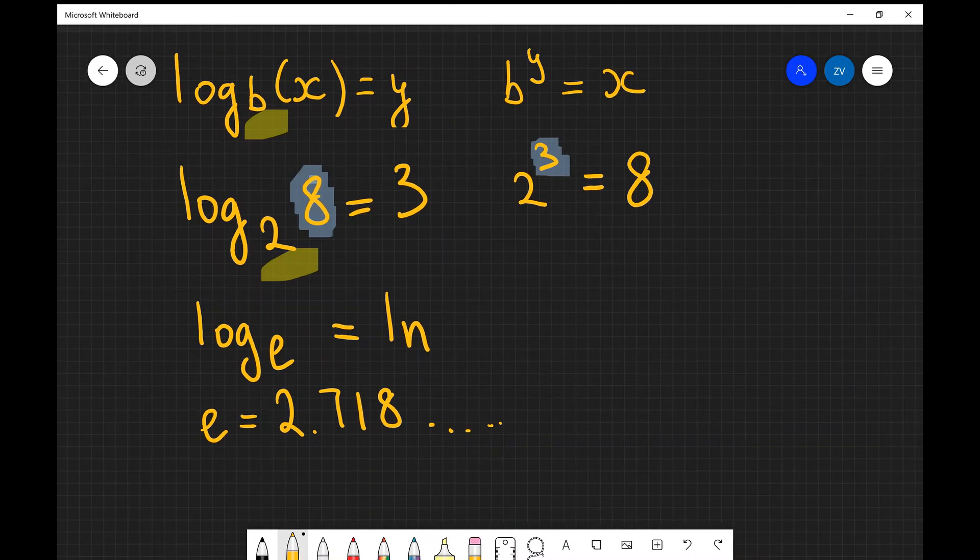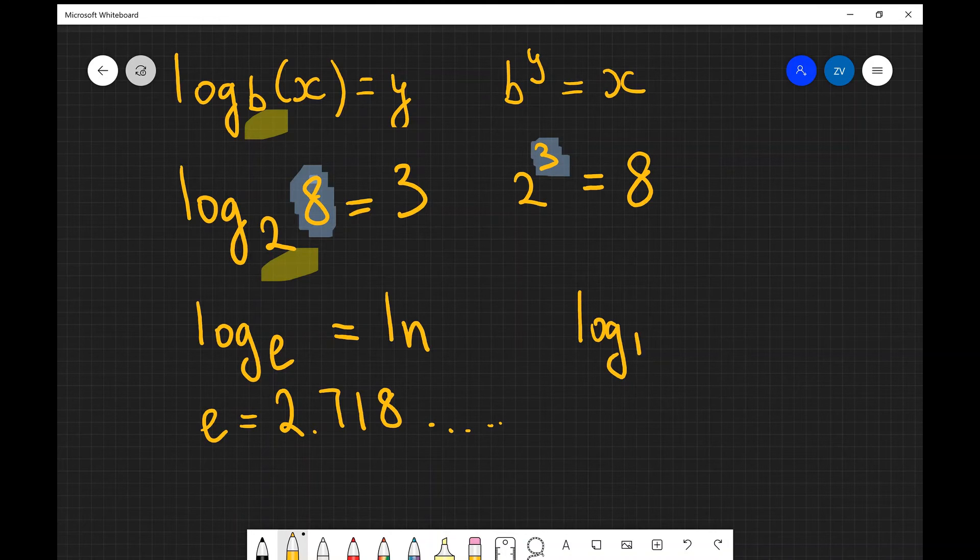The other really important base that sometimes comes up in questions is log base 10, and in OCR physics this is normally given as lg. Sometimes it's written in general as just log. I believe that's the way it is on my scientific calculator as well but this is something just to be aware of.